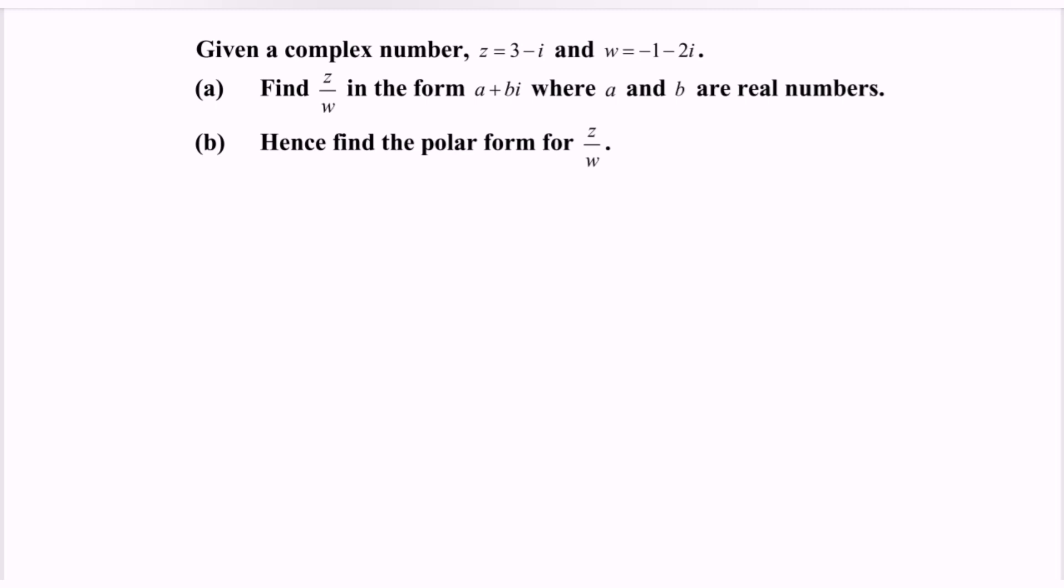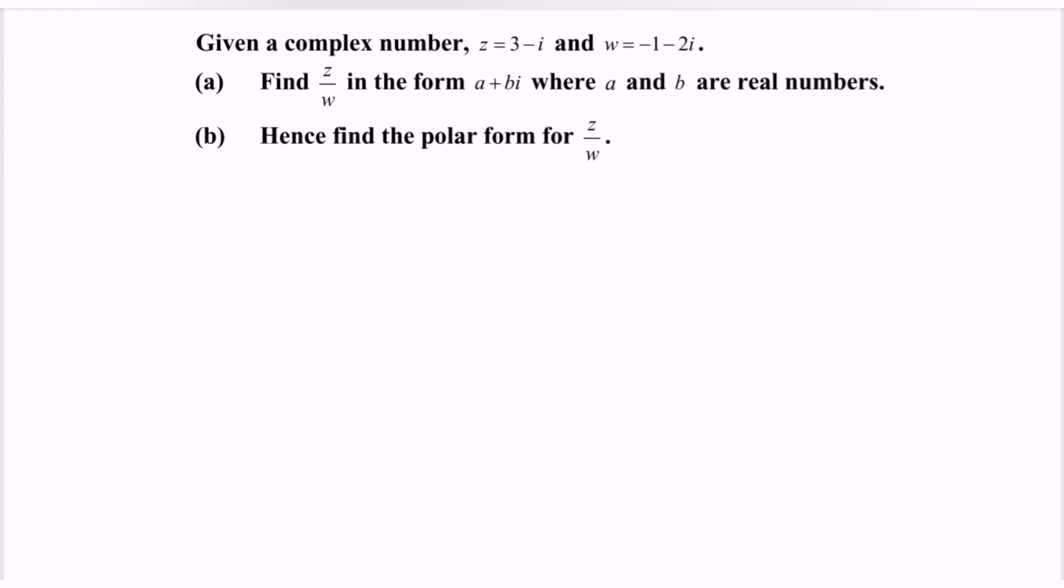Given complex numbers z = 3 - i and w = -1 - 2i: (a) Find z/w in the form a + bi, where a and b are real numbers. (b) Hence, find the polar form for z/w.